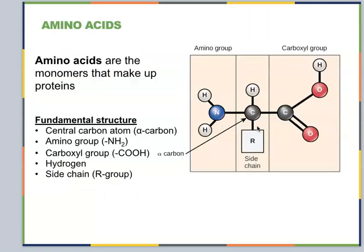How do we actually build proteins? They're built from 20 different amino acids, and each amino acid has a specific set of functional groups centered around a central carbon — an alpha carbon. It has an amino group — and there's that nitrogen — a carboxyl group (the COOH), a hydrogen, and then some R group. That R group is like a base Lego block, and anything you change there will change how this amino acid interacts with other amino acids.